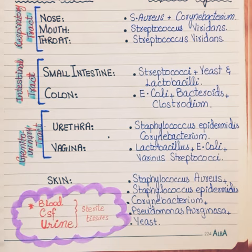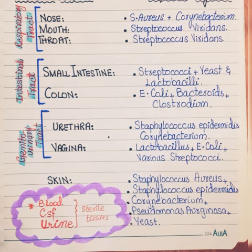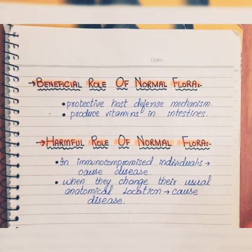An important point: in a healthy human, internal tissues such as blood, CSF, and urine are already sterile tissues. They are normally free of microorganisms, so there are no normal flora at these sites.